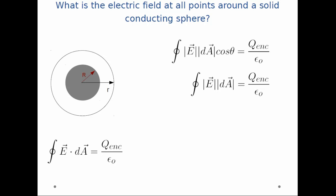Next, I realize that the angle between the area vector and the electric field vector is 0, so cosine 0 is 1. Next, I can pull out the electric field vector because it is constant at all points on the Gaussian surface.